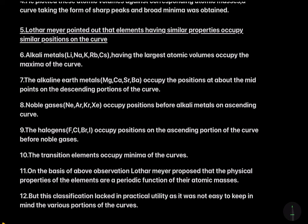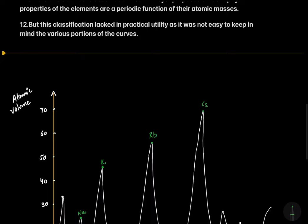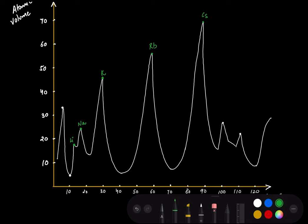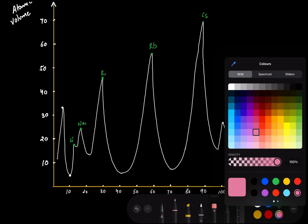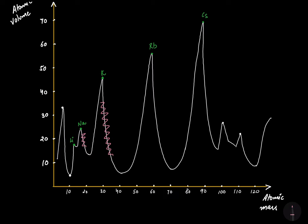The alkaline earth metals — magnesium, calcium, strontium, and barium — occupy positions at about the midpoints of the descending portions of the curve. The descending portions are the downward slopes of each peak, and at the midpoint of these descending portions we will find the alkaline earth metals.